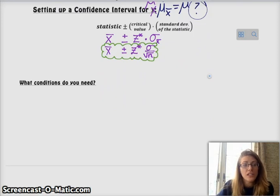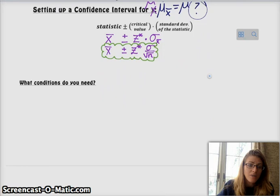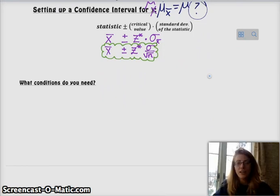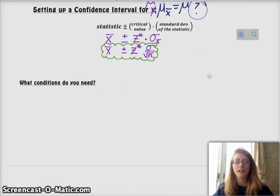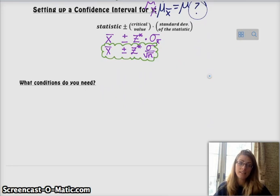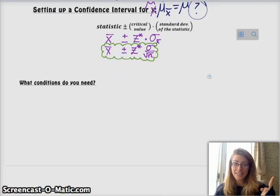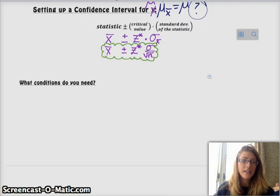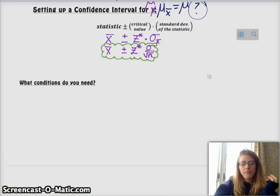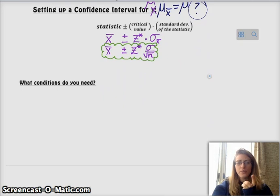You definitely need your conditions because if your conditions aren't met, then your sampling distribution isn't approximately normal, and then you cannot actually create the interval. Let's do those conditions. They're very similar to the proportion conditions. What do you think? Still need normal, still need independent, still need random.